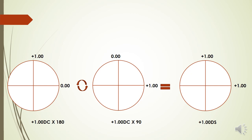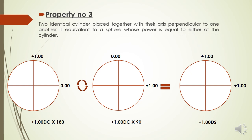Moving to the third property: obtaining a spherical lens from two cylindrical lenses. The property states that whenever two identical cylinders are placed together with their axes perpendicular to one another, they produce a spherical power. Identical means both have the same power and same sign — for example, both plus 1 — but one axis is at 180 and the other is at 90 degrees.